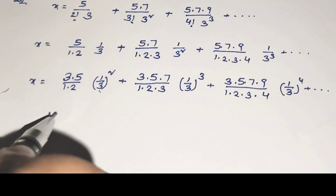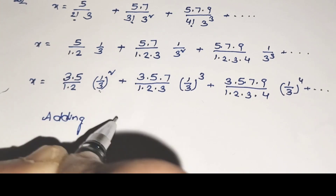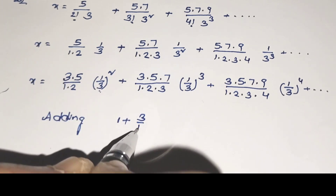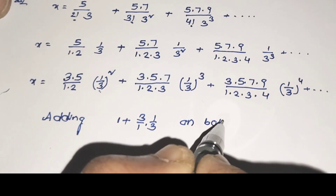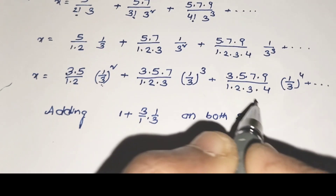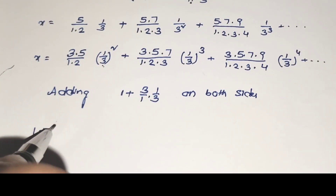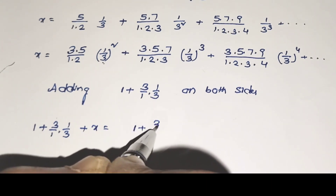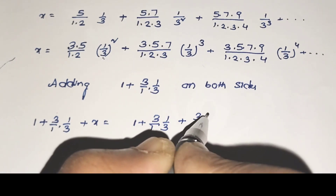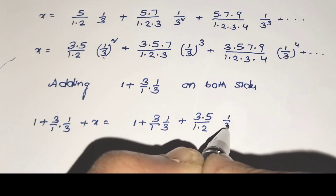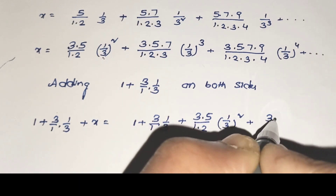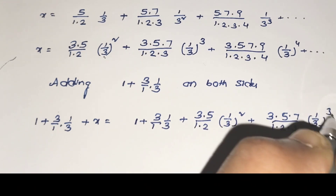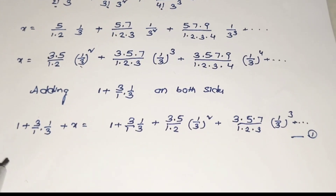Now we have the third value. We have to add the first and second values. What is the first value of the series? 1 plus the second value: 3/1 × (1/3), and then adding these two values, forcing this series into formula notation. Therefore 1 + (3/1)×(1/3) + x equals adding the same value — 1 + (3/1)×(1/3) + (3×5)/(1×2)×(1/3)² + (3×5×7)/(1×2×3)×(1/3)³ and so on. This is equation 1.